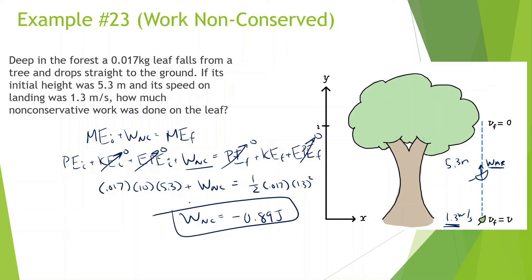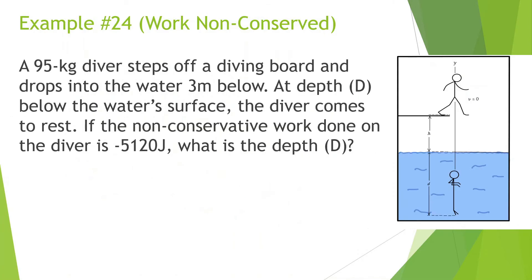That should make sense — air resistance pushes upward while the leaf moves downward, so the work done is negative. Many times work non-conserved is negative because it comes from friction, air resistance, or something like that. Let's look at the next one.